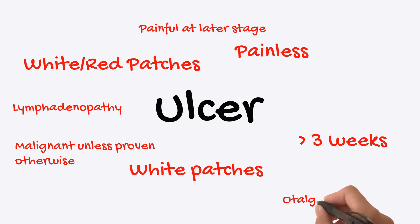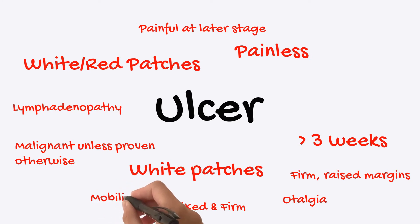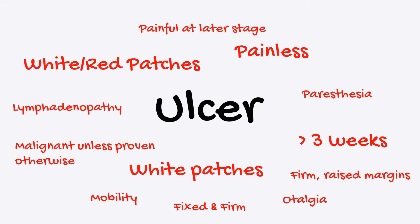You may have otalgia accompanying pain from the tongue or as a result of an oropharyngeal tumour. The ulcer is usually described as firm with raised edges and a necrotic appearance, with damage to localised tissues. It may be indurated, inflamed, with a granular base, and is usually fixed and firm relative to surrounding tissues. You may also get mobility of teeth, paresthesia, and ill-fitting dentures as complaints from a patient.